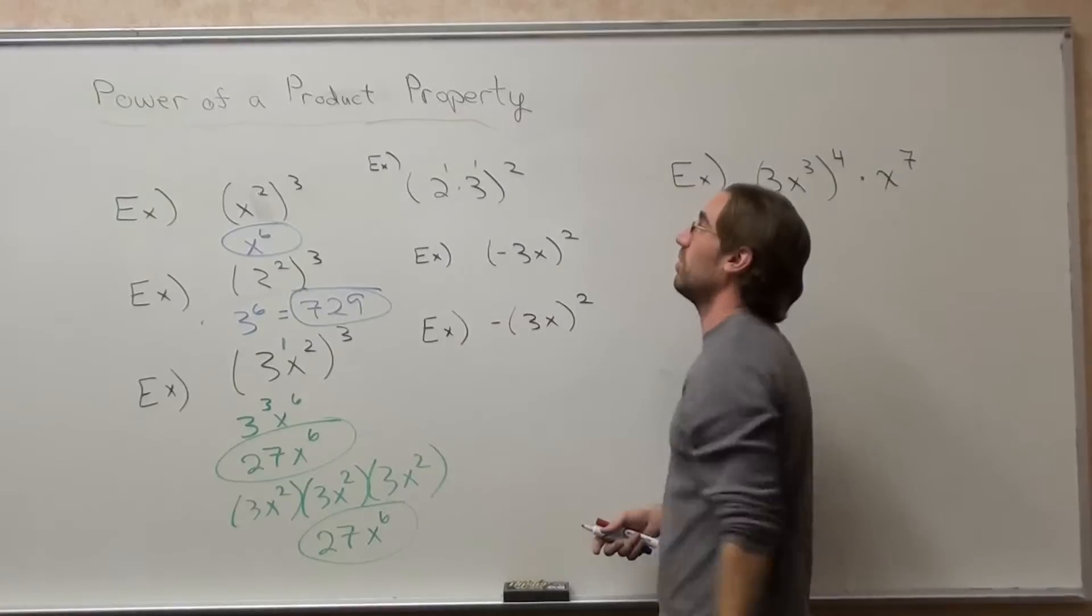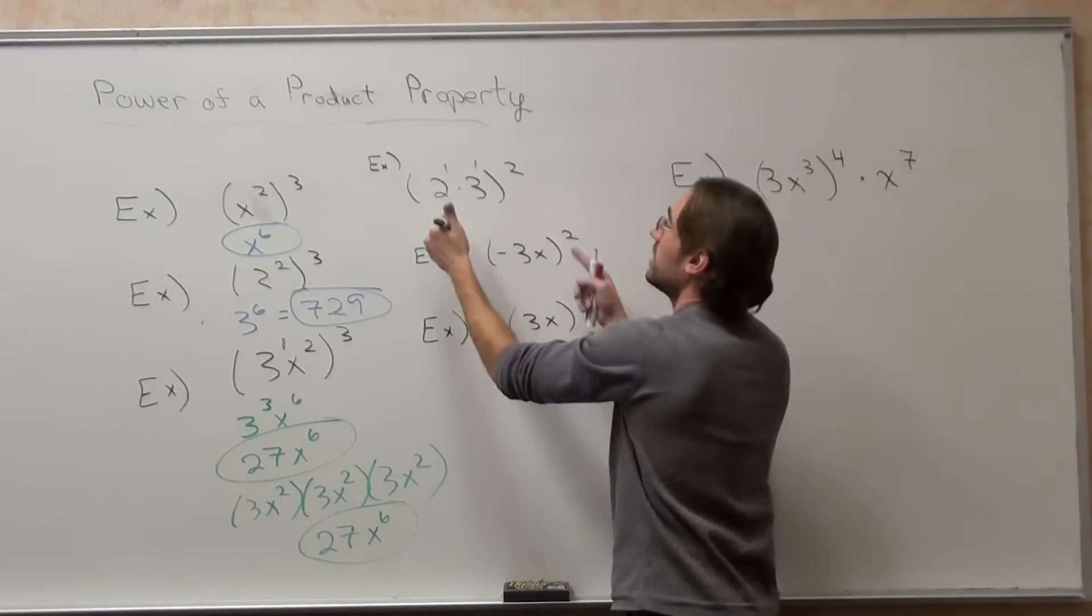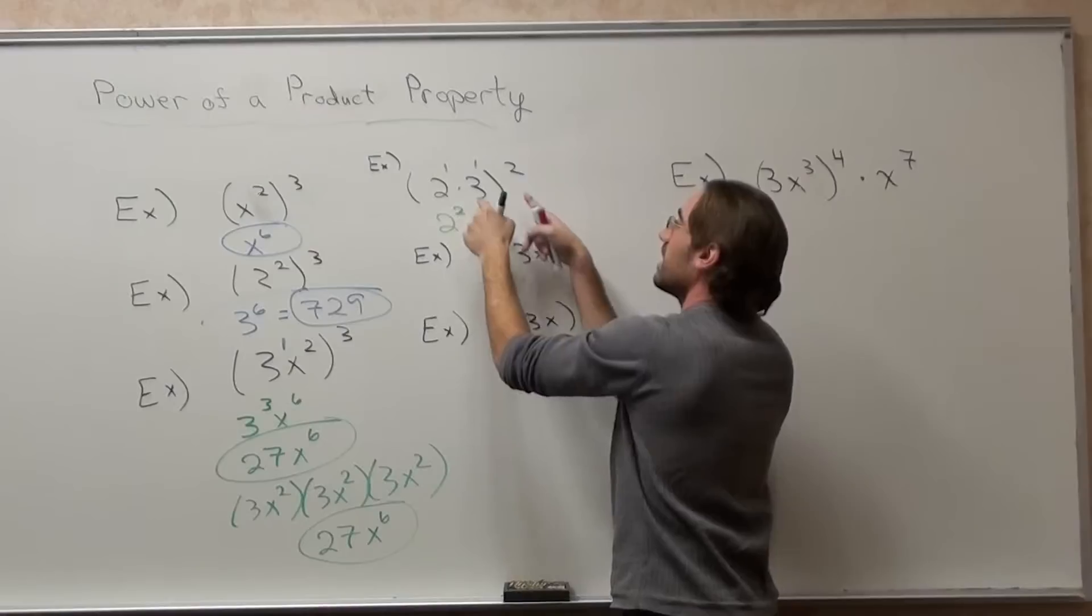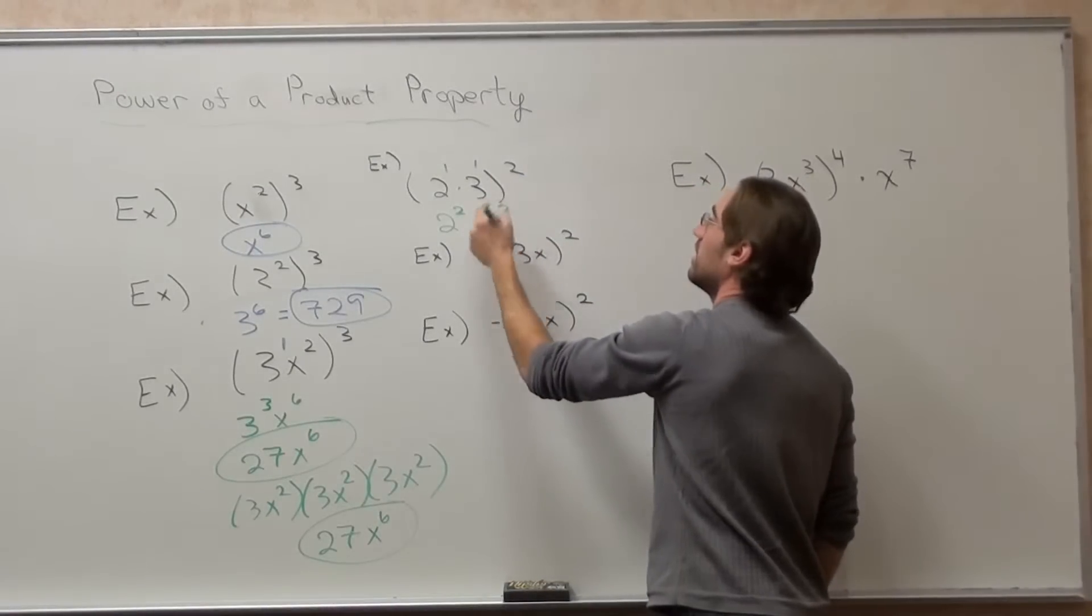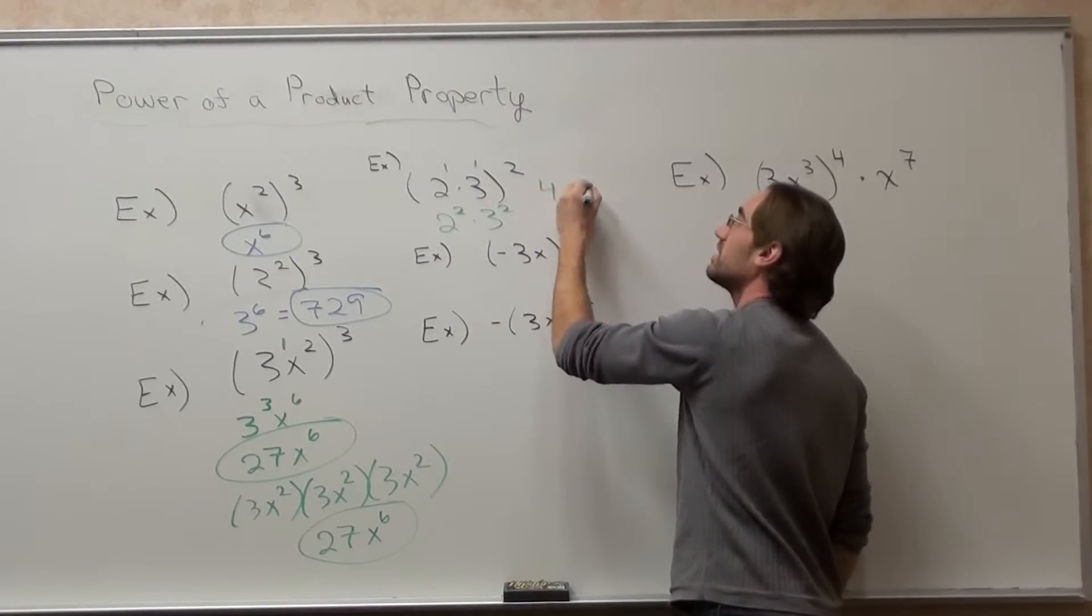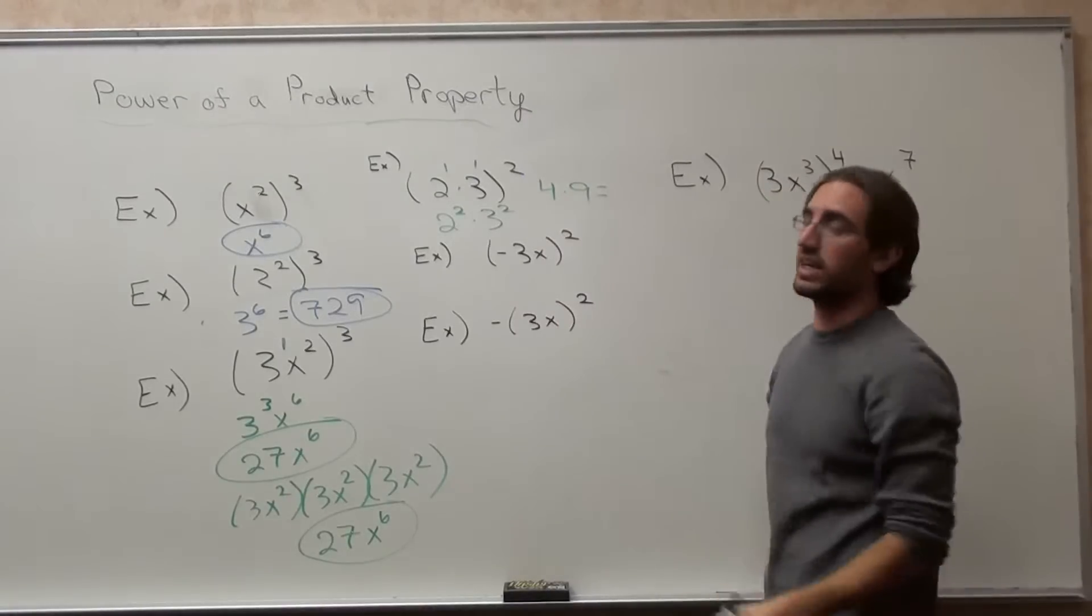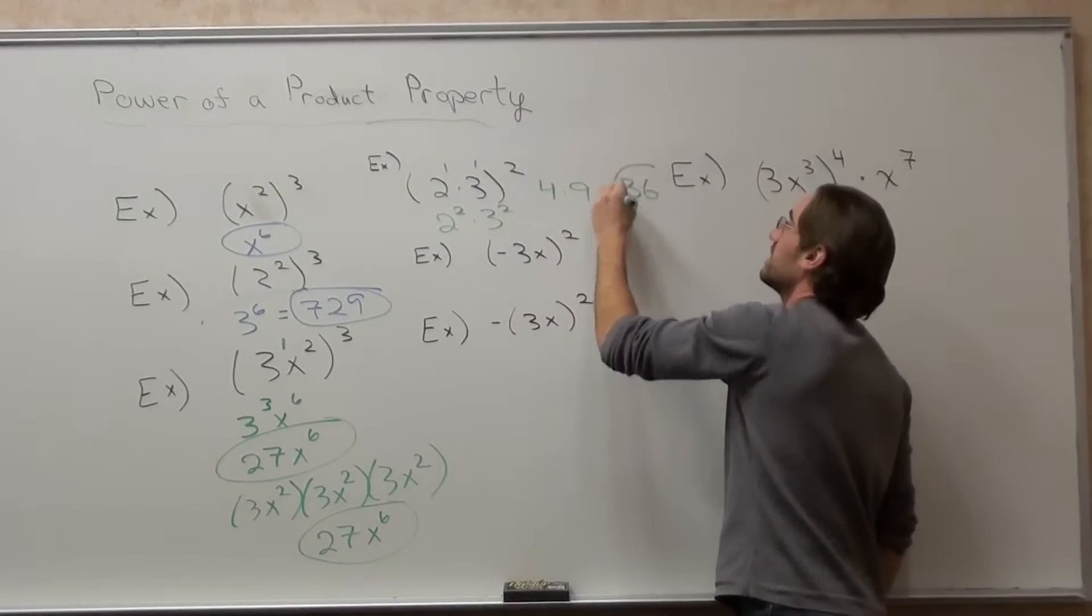You could also do it this way. Put a 1 on top of the 2, put a 1 on top of the 3. That's 2 to the second times 3 to the second. 2 to the second is 4 times 9, 36. Same exact answer.